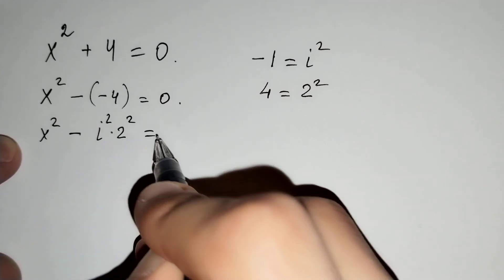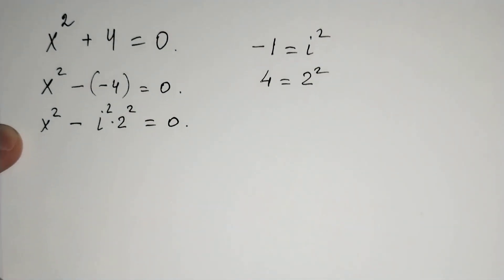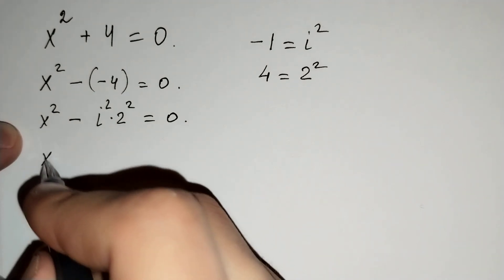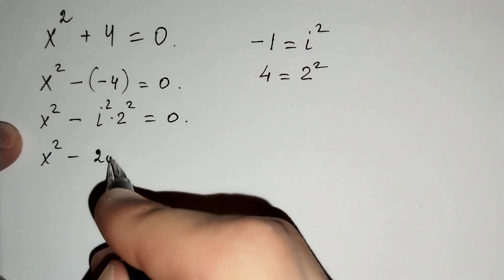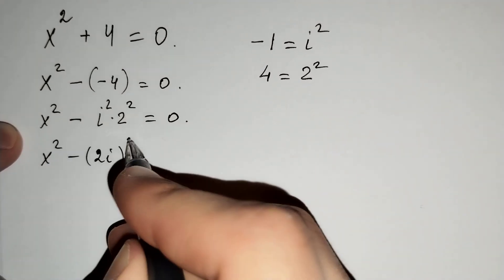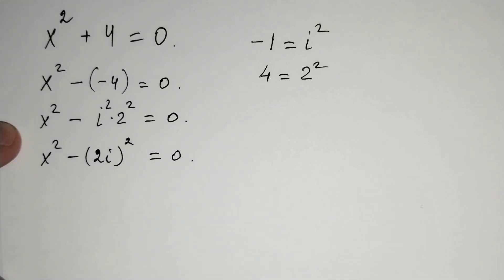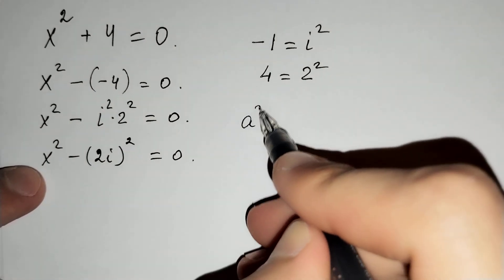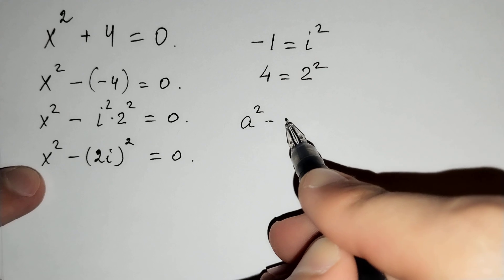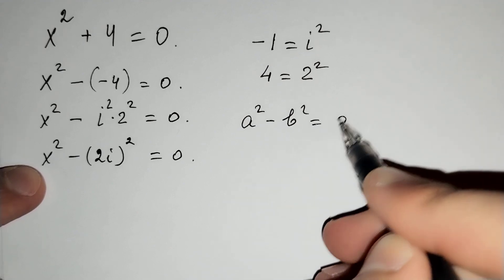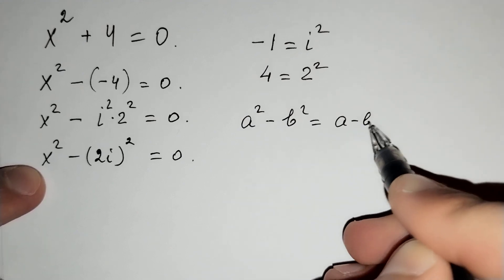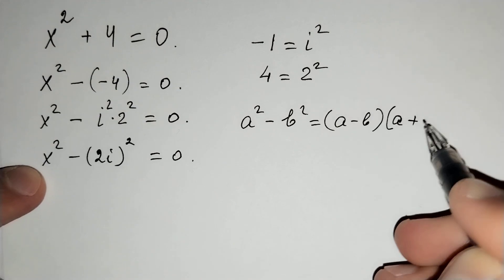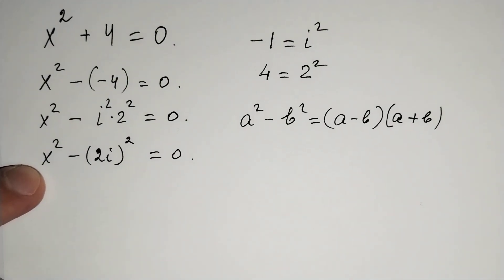This gives us x squared minus (2i) squared equals 0. We now apply the difference of squares formula: a squared minus b squared equals (a minus b) times (a plus b).